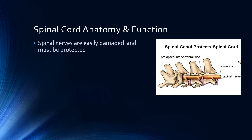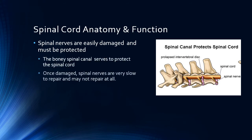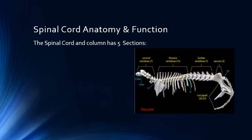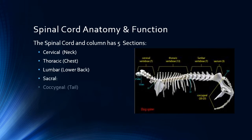The nerves of the spinal cord are fairly fragile, and nature has provided the bony spinal column to protect them. When spinal nerves are damaged, they are slow to heal — if they heal at all. If the nerves are severed, they typically do not repair themselves and the pet may be left permanently paralyzed. The names of the sections of the spinal cord mirror those of the spinal column, and each section performs different functions. We can attempt to isolate where the injury is based on which functions are not working properly.